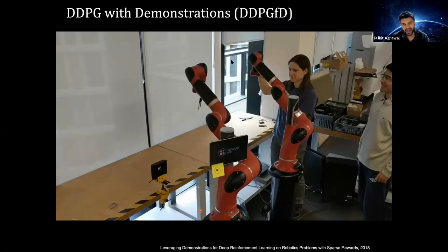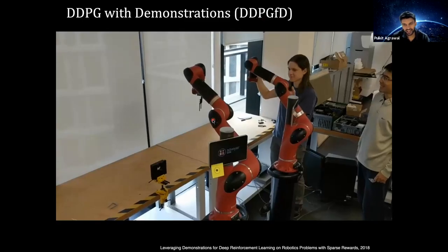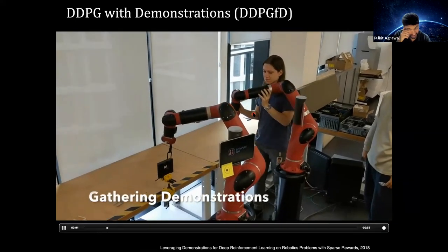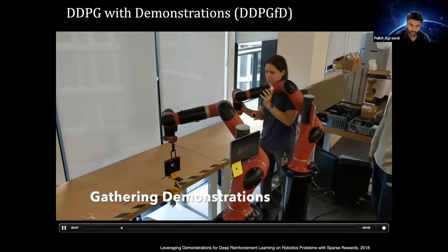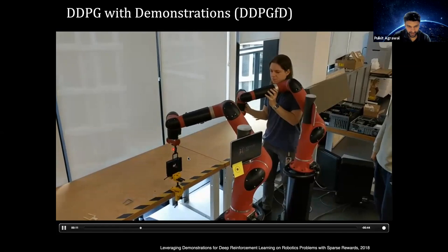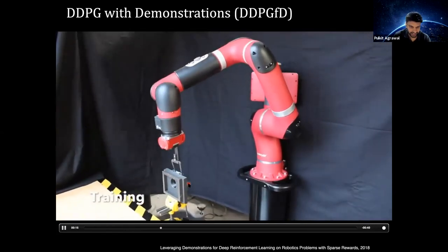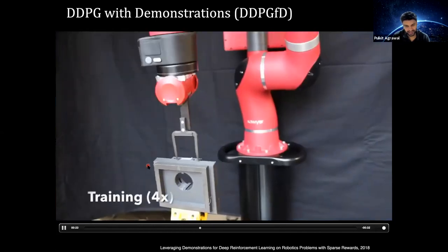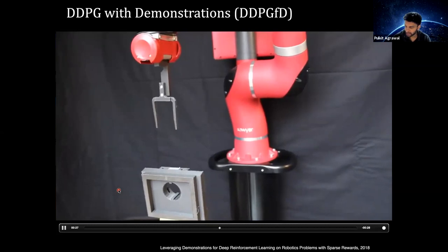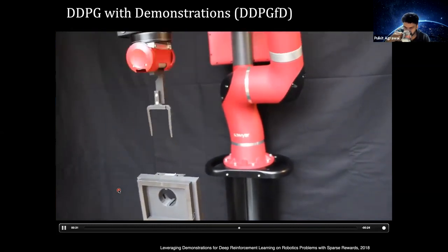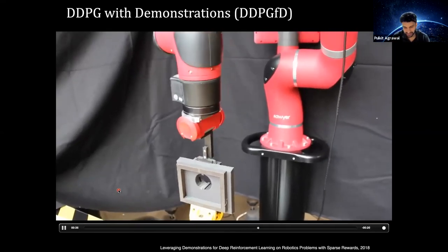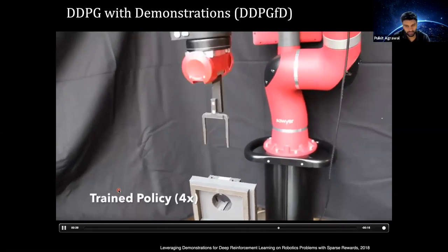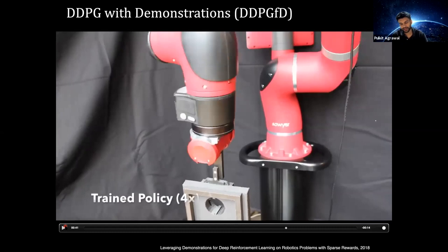We can apply the same idea to continuous action Q-learning with DDPGfD. Here a person gathers demonstrations, showing the robot what to do — specifically inserting an object into its socket. We put those demonstrations in the replay buffer in DDPG and do DDPG optimization in the real world. As time progresses, the agent learns how to perform the task. This is one of the most straightforward ways to use demonstrations: add them to the replay buffer.